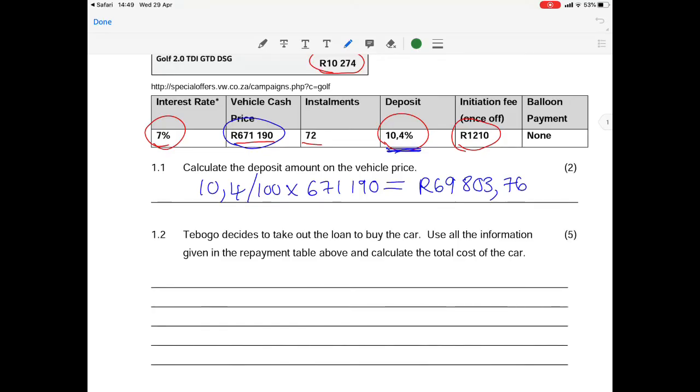Question 1.2 tells us that Tabogu is going to take this loan and we must calculate the total cost of the car. Your total cost is going to be your repayments because your repayments all 72 of them include your interest payments plus the initiation fee and plus your deposit.